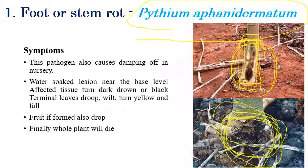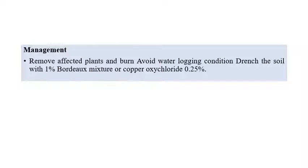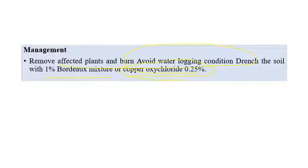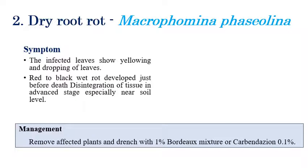Due to wilting, the roots cannot absorb the water and nutrients essential for the plant, so the plant slowly dies in later stages. Coming to management: remove and burn the infected plants, avoid waterlogging conditions, and drench the soil with 1% Bordeaux mixture or Copper oxychloride at 0.25%.